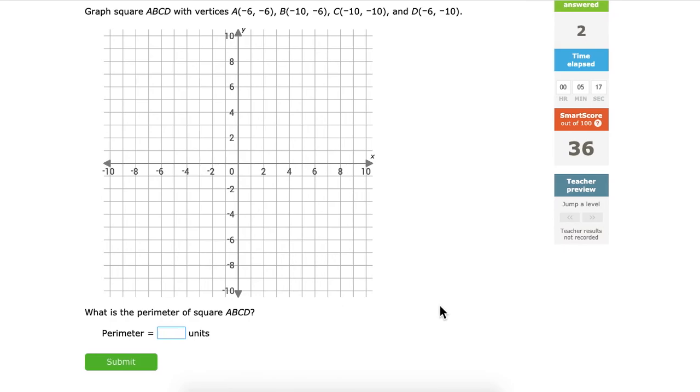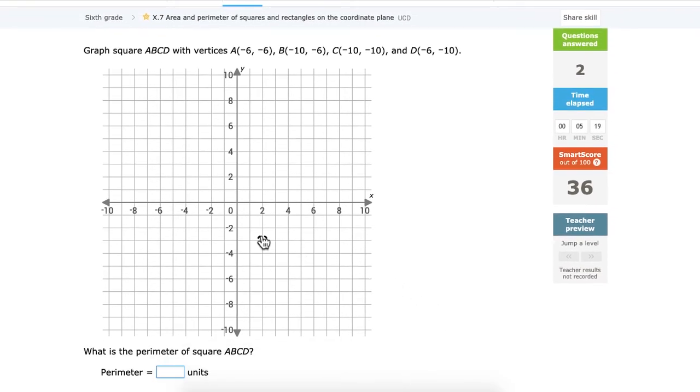Again, this one wants a perimeter, so this one you're going to have to do what? Okay, you're going to get this one, then we're going to move on. So negative 6, and negative 6, and negative 10, and negative 6, negative 10, and negative 10. It has to be right there, doesn't it? Okay, so again, so we go from negative 6 to negative 10, so that's just 4, isn't it?